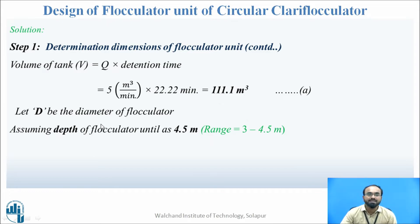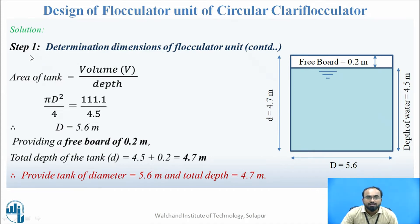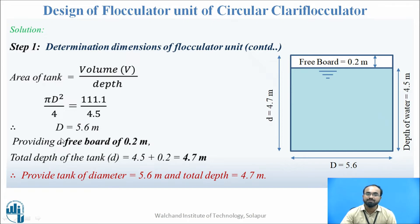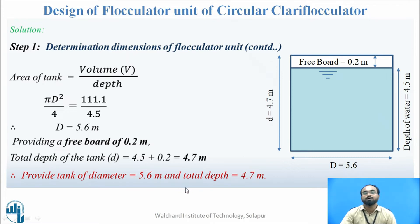Let D be the diameter of the flocculator. We assume the depth to be 4.5 meters; the range is 3 to 4.5 meters. Using area = π D²/4 = volume / depth = 111.1 / 4.5, we get D = 5.6 meters. Adding a freeboard of 0.2 meters (range 0.2 to 0.5 m), total depth = 4.5 + 0.2 = 4.7 meters. So we provide a tank with diameter 5.6 meters and total depth 4.7 meters.